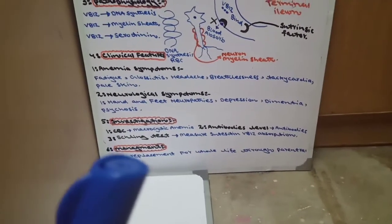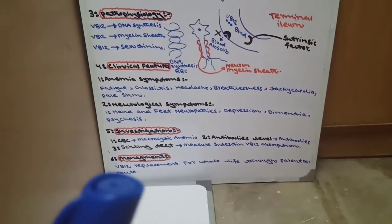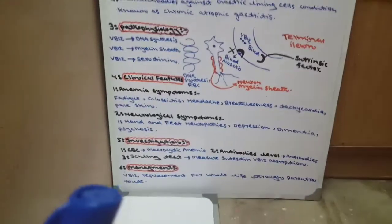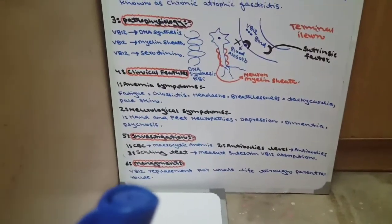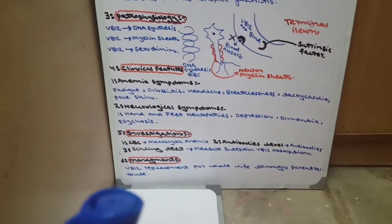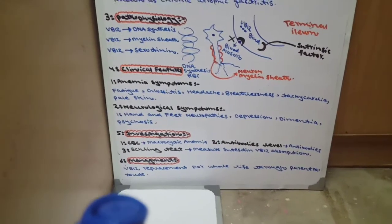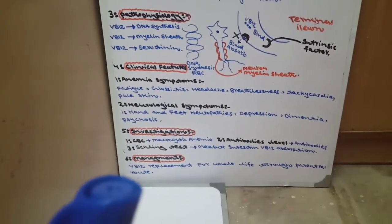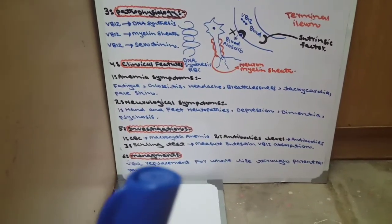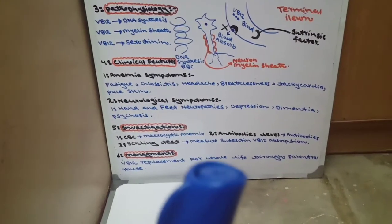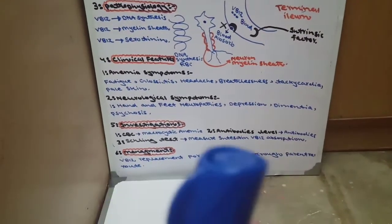The last is management. How do we manage? If we give oral vitamin B12, it won't be absorbed. So we do vitamin B12 replacement for the whole life through parenteral route - the parenteral route.